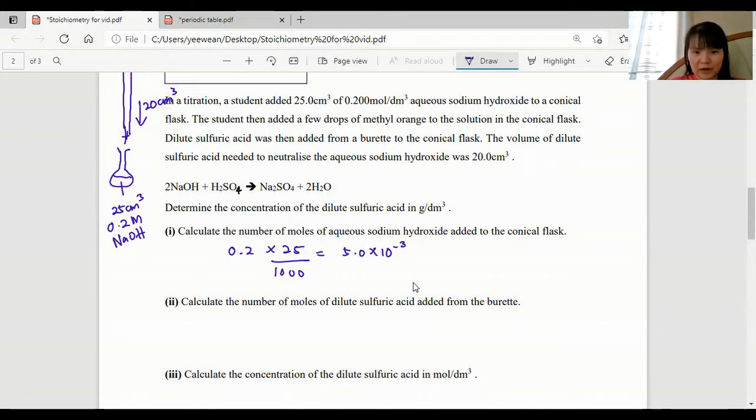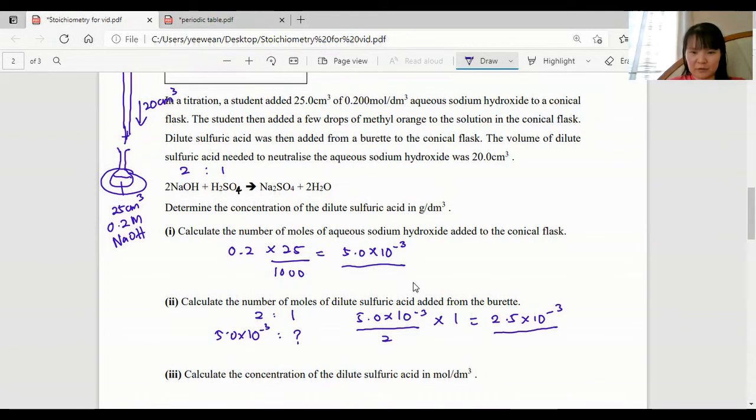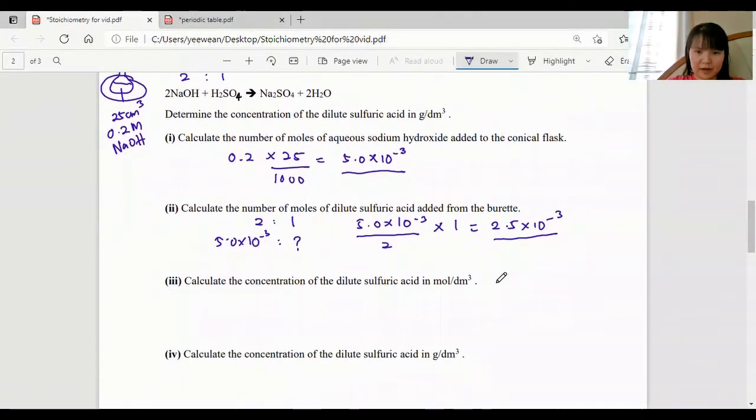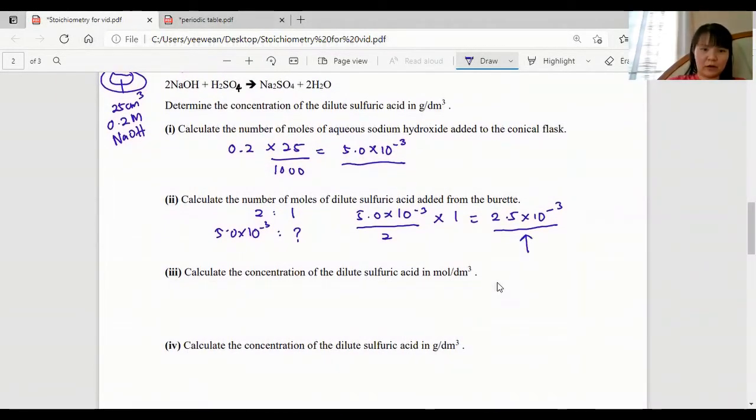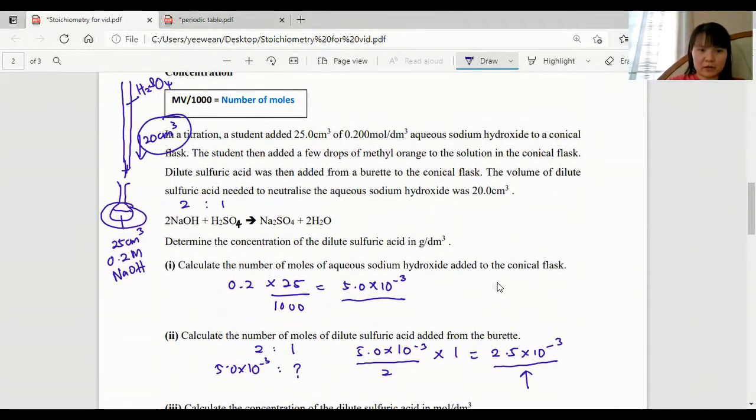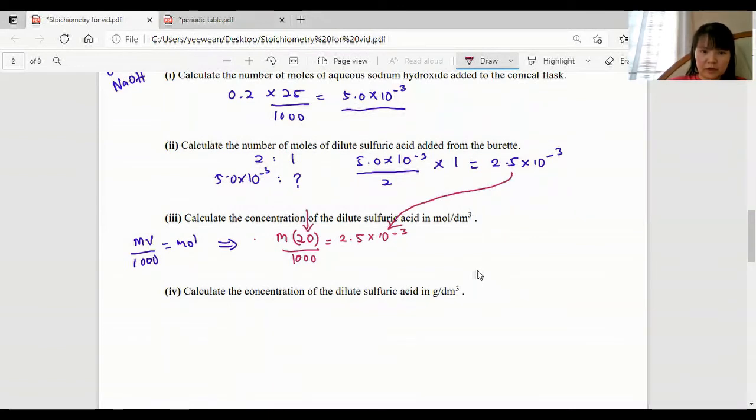Next, calculate the number of moles of dilute sulfuric acid added from the burette. We don't know the concentration, but that's fine because we know the mole ratio is 2 is to 1. So if we have the number of moles of sodium hydroxide, we can calculate the number of moles contained inside this 20 centimeter cubes of sulfuric acid. What we need to do is just divide by 2, because 2 is to 1. So this is our number of moles of dilute sulfuric acid from the burette.